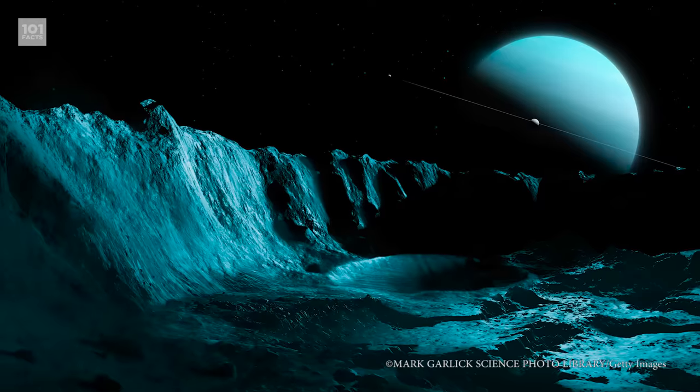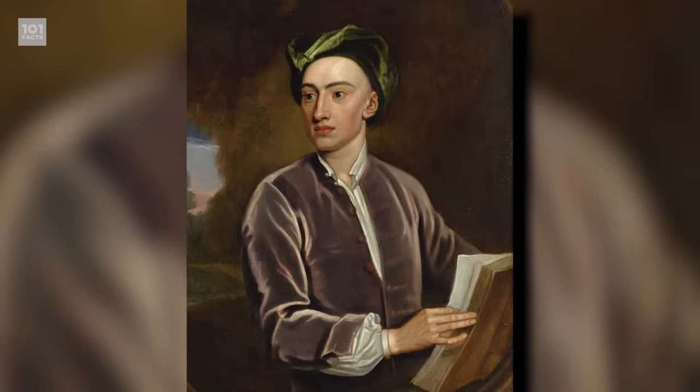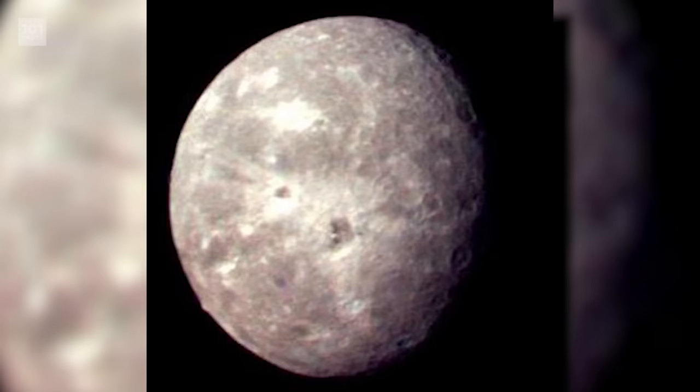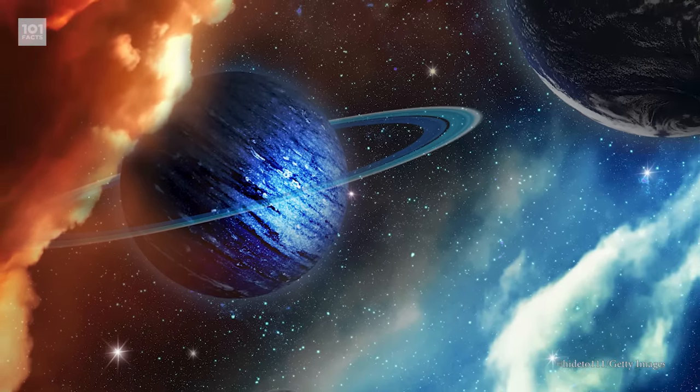Uranus has 27 moons, and they're all named after characters from the works of William Shakespeare and Alexander Pope. The five main ones are Miranda, Ariel, Umbriel, Titania, and Oberon. Despite the amount of moons, the satellite system of Uranus is actually the smallest of any of the giant planets.